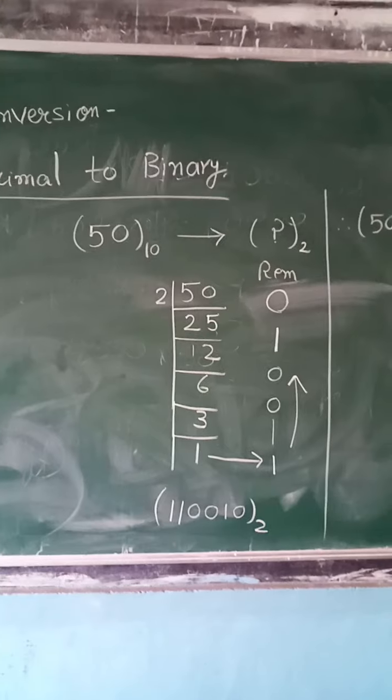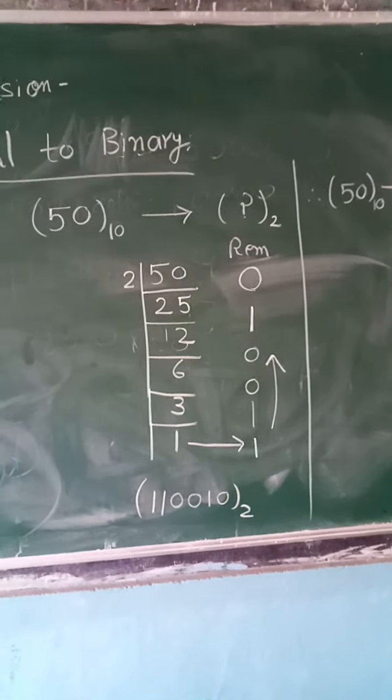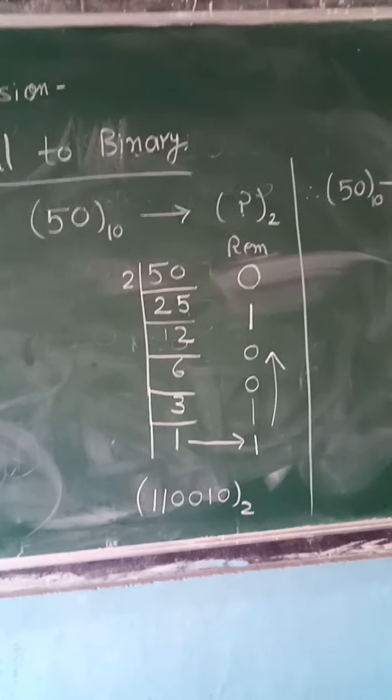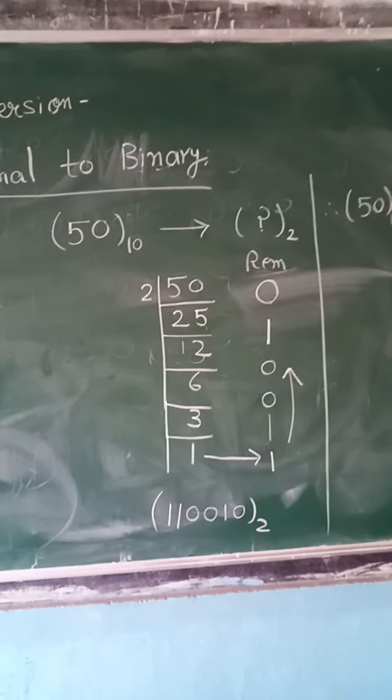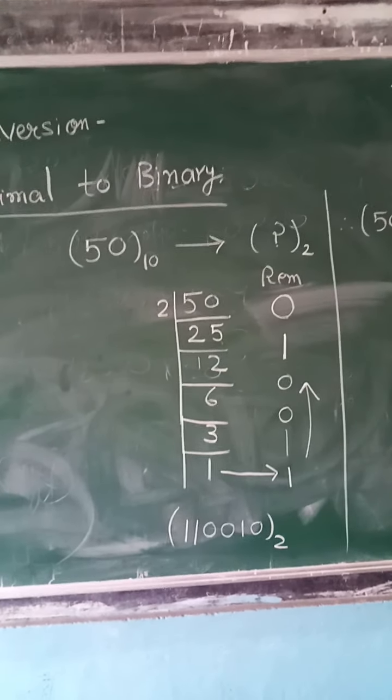And then last you will write in reverse direction, like 1, 1, 0, 0, 1, 0. And because this is in binary number system, so its base is 2, so this way you write 50 in decimal number system.